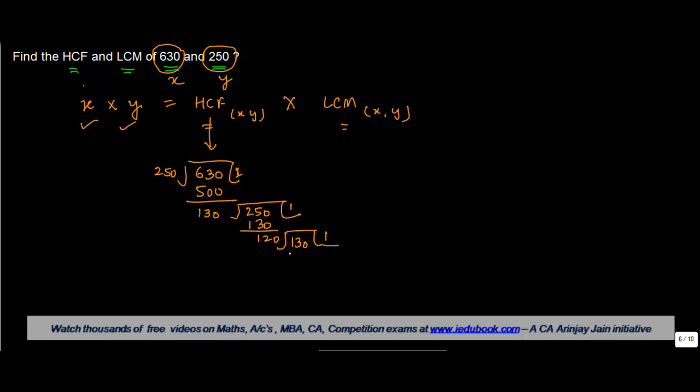1 times 10, so you get 10 into 120. Into 12 gives you 120, remainder 0. So the HCF is actually 10.